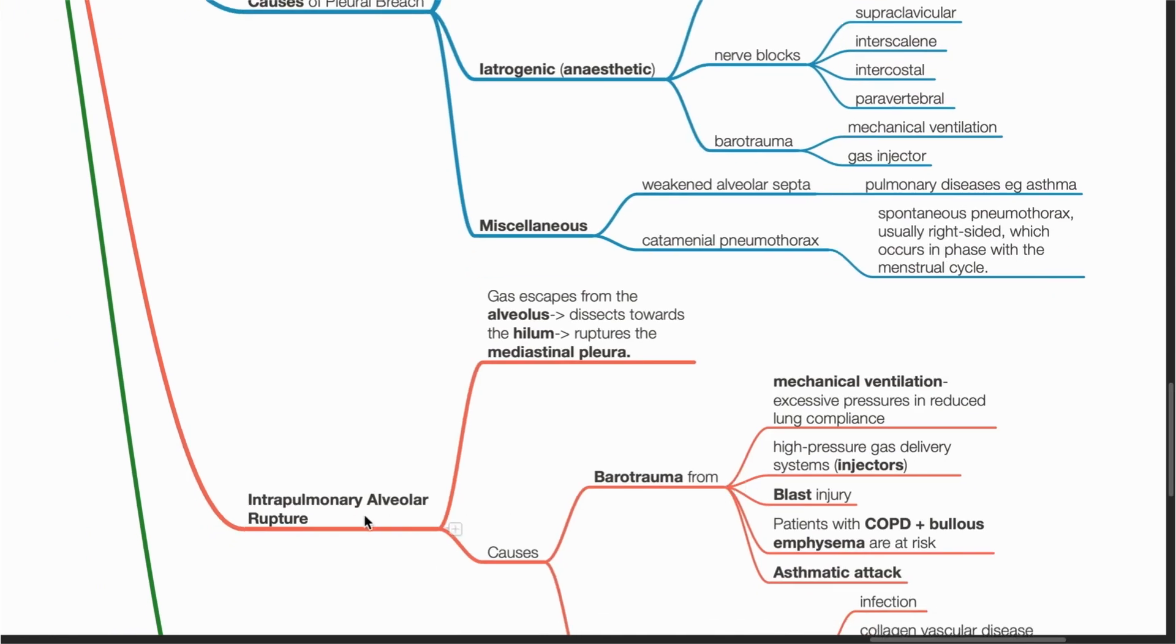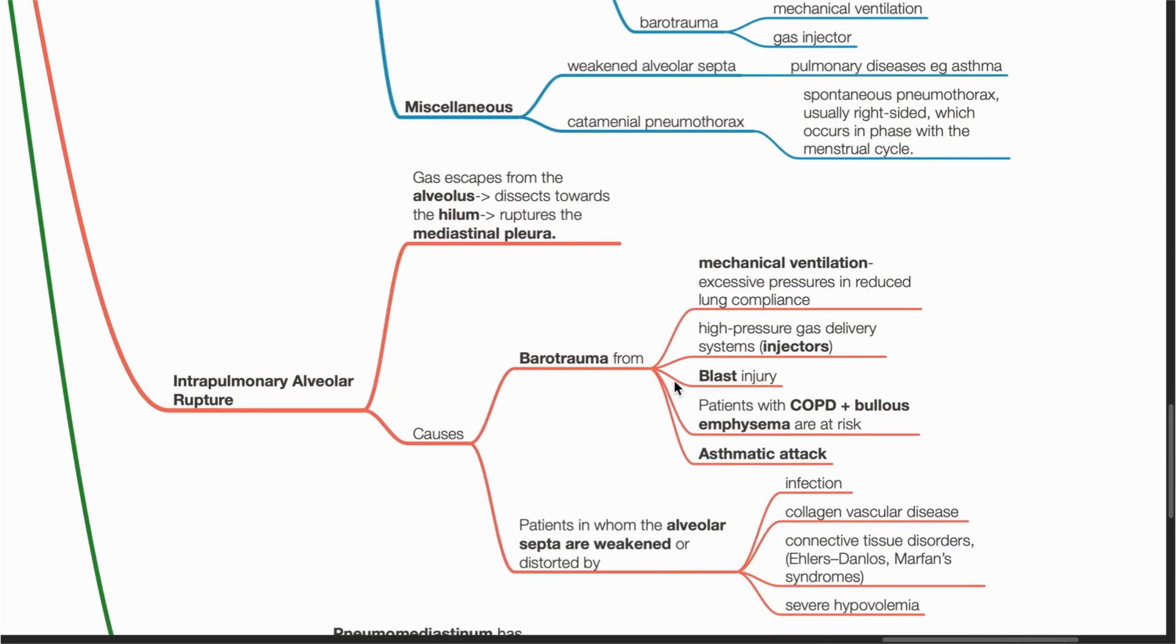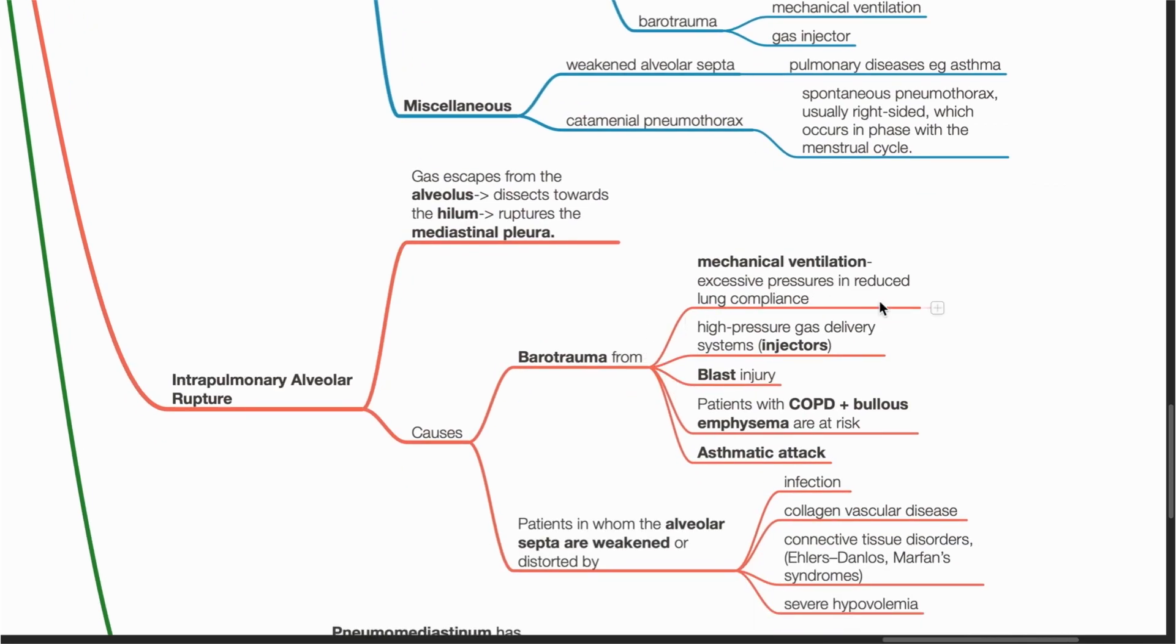In intrapulmonary alveolar rupture, gas escapes from the alveolus, dissects towards the hilum, and ruptures the mediastinal pleura. Causes include barotrauma from mechanical ventilation, injectors of gas, blast injury, or asthmatic attacks. Patients with COPD and bullous emphysema are at risk.